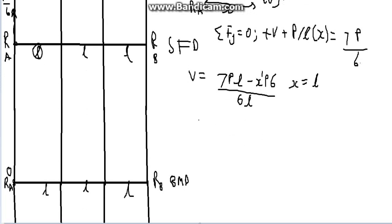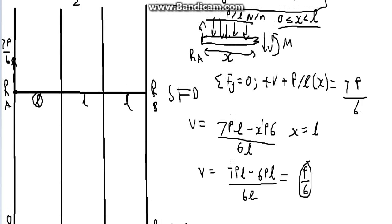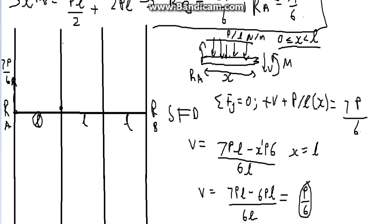Substitute x equals L here. 7PL subtracts 6PL divided by 6L. Quick math. P divided by 6. That is the intersecting point along this line here. This line L. So, this is actually, in the end, just a linear line going down there.